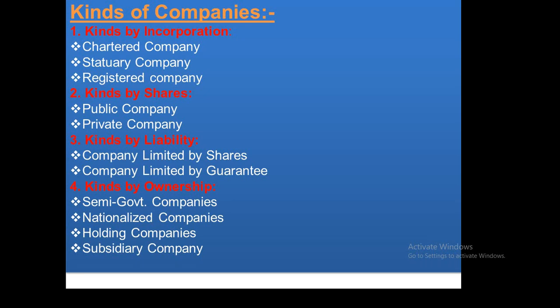Private management: companies with a board of directors selected as part of a private company are privately managed. Nationalized companies are those taken over by the government. In Pakistan, after independence, nationalization occurred and some companies' economies dropped as a result. Later, these companies moved back into the private sector.